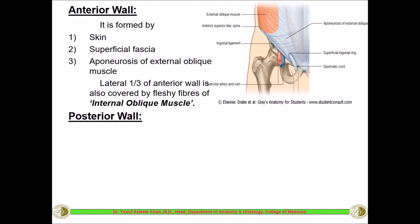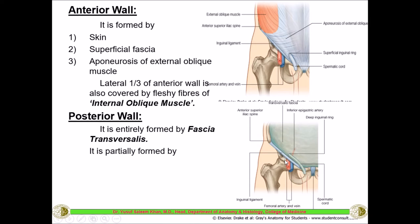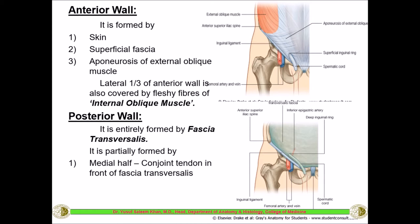The posterior wall is totally deficient — it is just made up of the transversalis fascia. With all muscles removed from the front, you can see deep inside just the transversalis fascia entirely forming the posterior wall. Partly, it is also covered by the conjoint tendon on the medial side. The conjoint tendon is formed by the fusion of the aponeuroses of the internal oblique and transverse abdominis on the medial half, which also forms the posterior wall in the medial half.